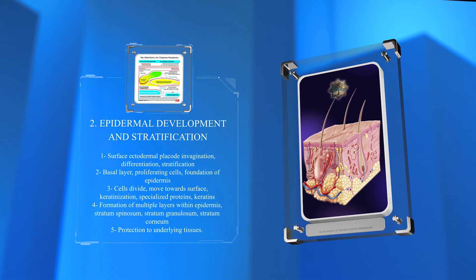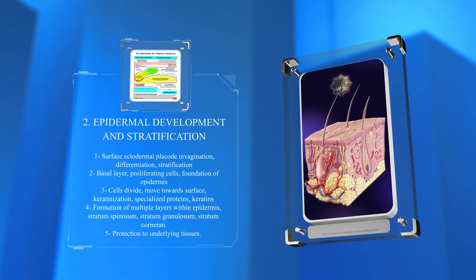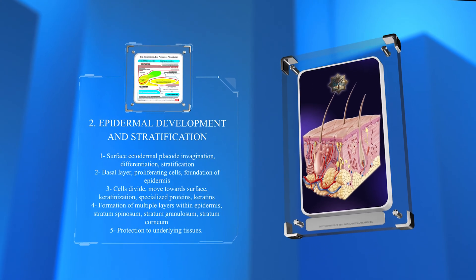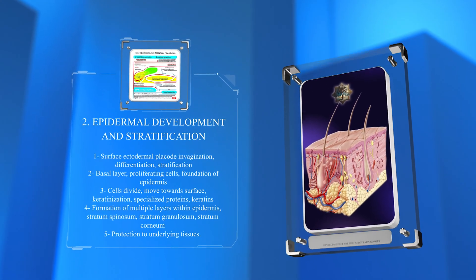This process leads to the formation of multiple layers within the epidermis, including the stratum spinosum, stratum granulosum, and stratum corneum, which collectively provide protection to the underlying tissues.